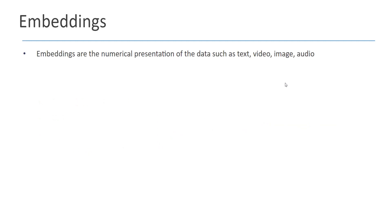So what are these embeddings? Embeddings are practically a kind of numerical representation of your data. The data type can be different, such as text, video, audio, and image. Why do we need to convert this kind of data into numerical representation? Because for a computer, textual information or audio information is not understandable. So we have to convert these data types into numerics, and when you have these numbers you are easily able to find what are similar concepts to each other.